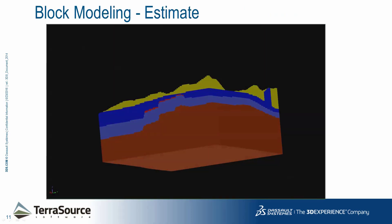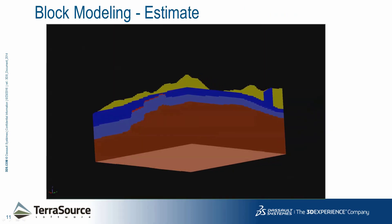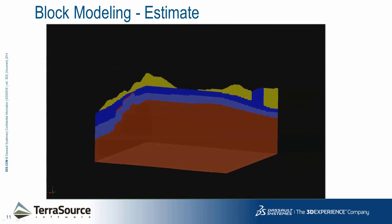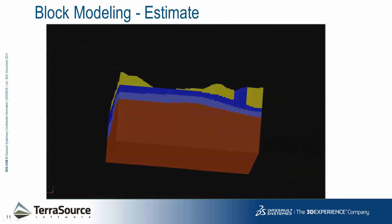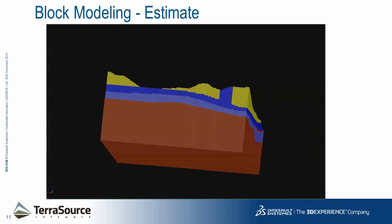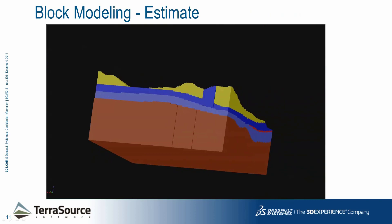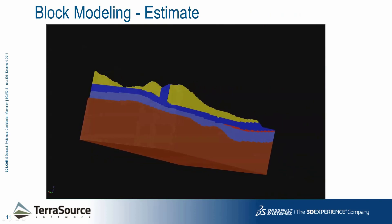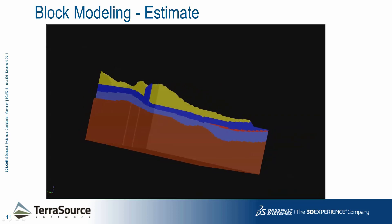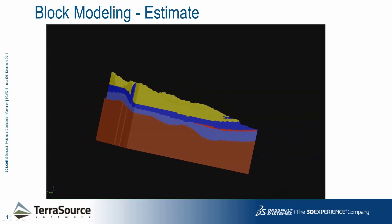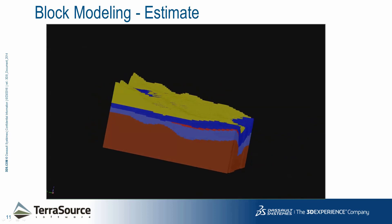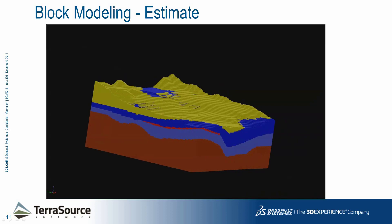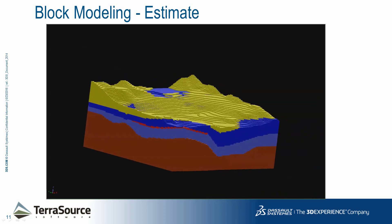Derived values such as C3S and lime saturation factor can be calculated from the block model grades. This overview shows the entire block model below topography. Overburden is in yellow. The two limestone units are in blue with the chert lens in red. The footwall shale is in brown. In this example, each block is 5 meters by 5 meters by 5 meters. In each block there are multiple attributes — one for CaO, one for MgO, etc. The actual values for each attribute are interpolated from the drill hole analyses.